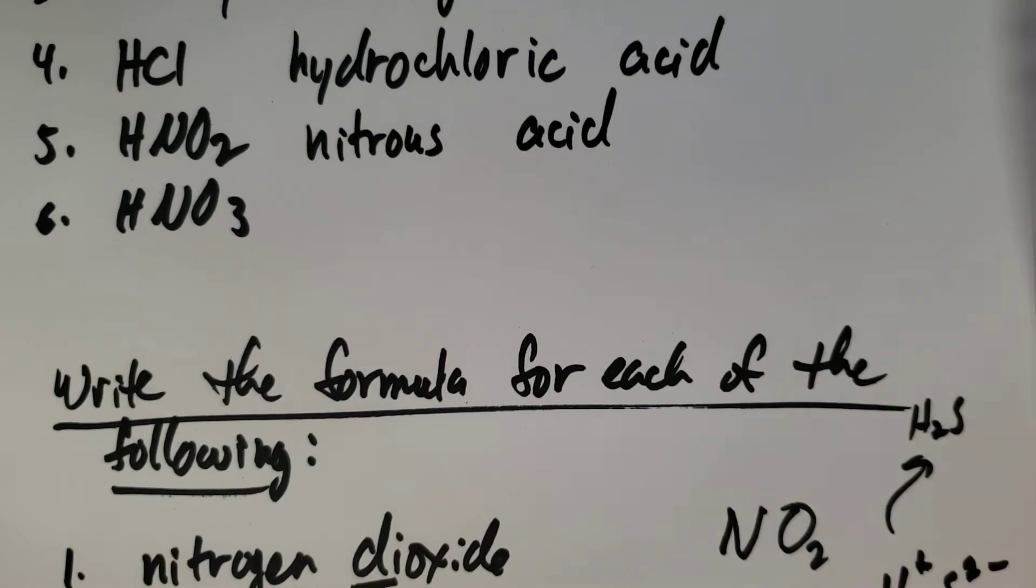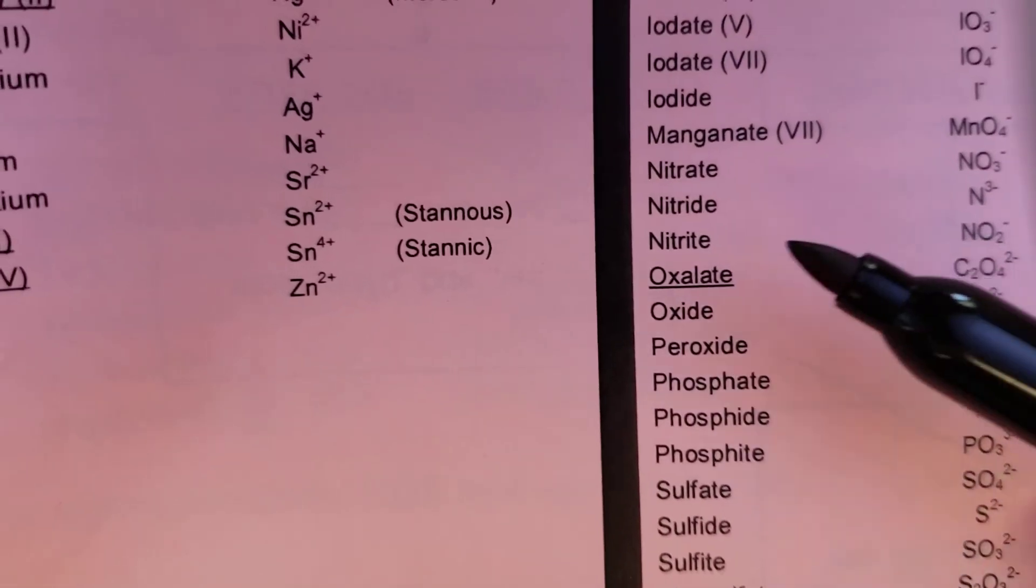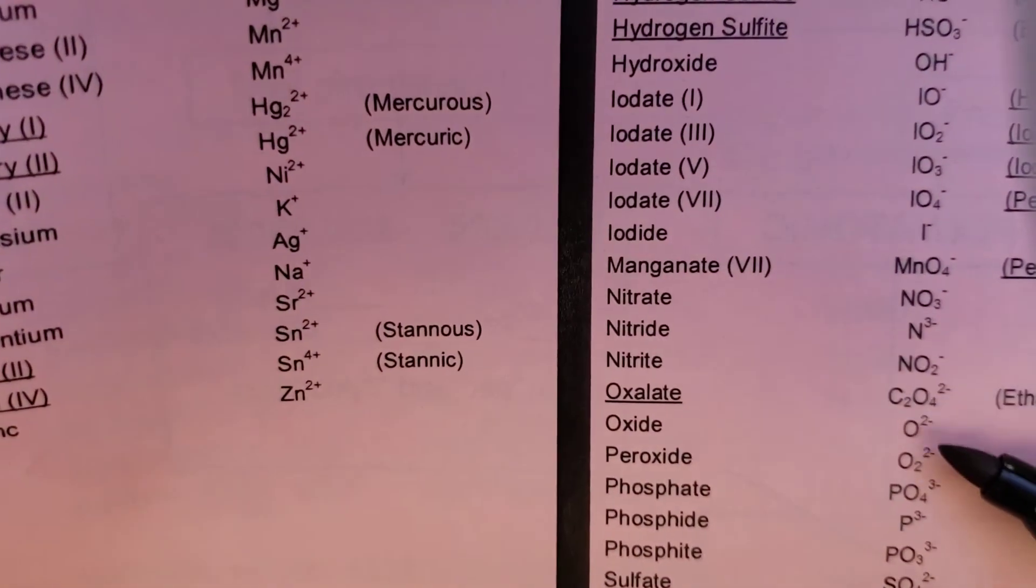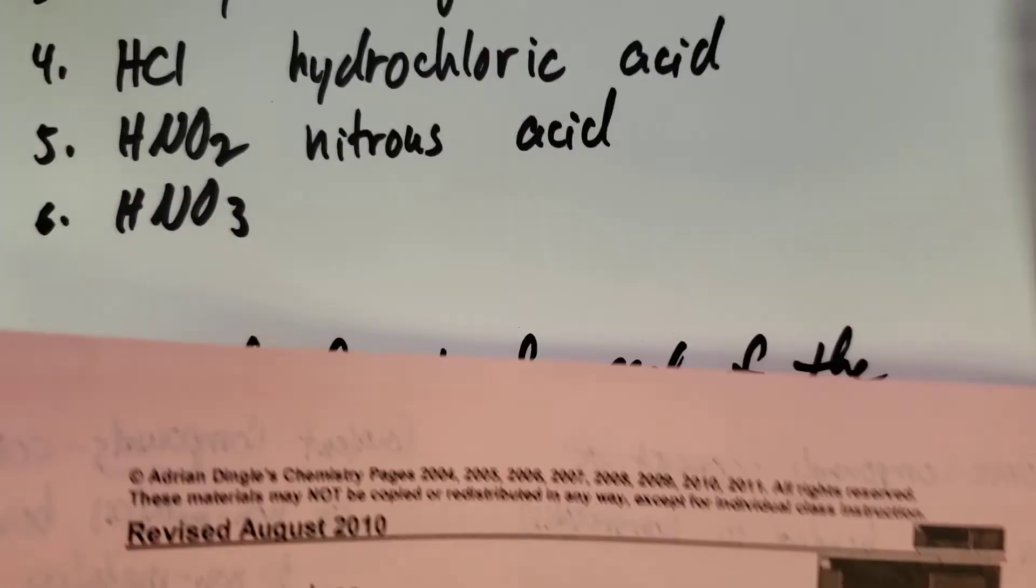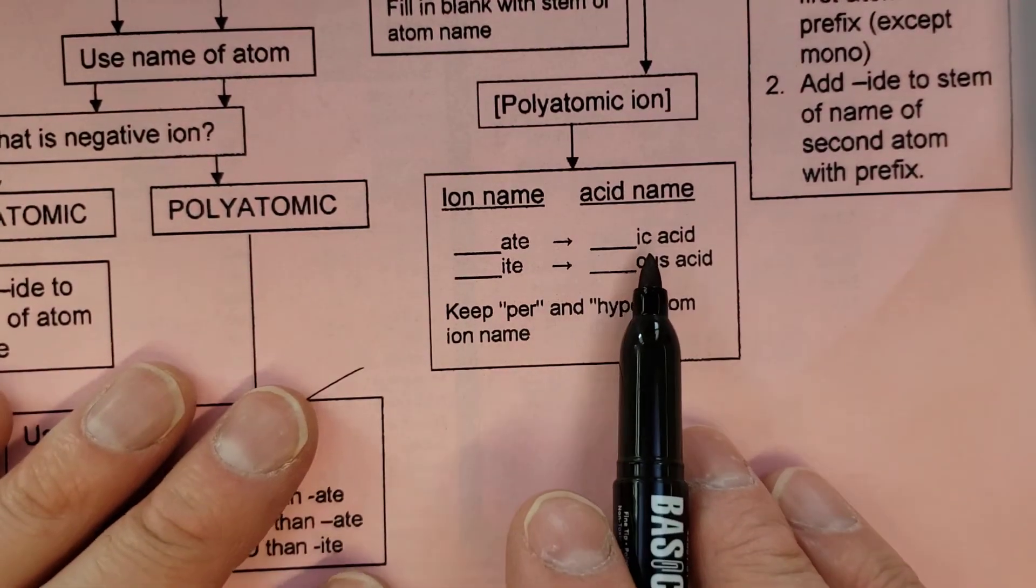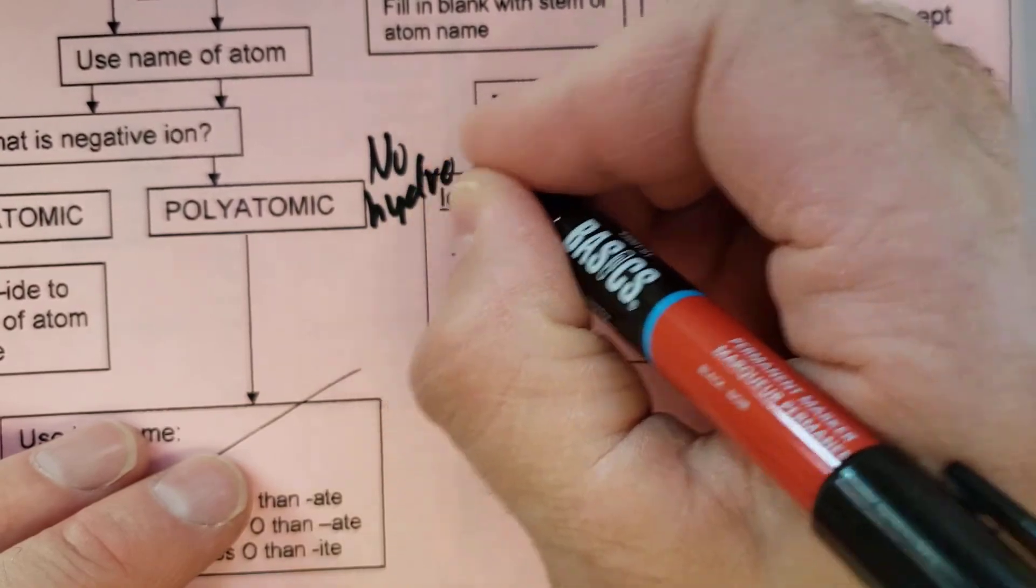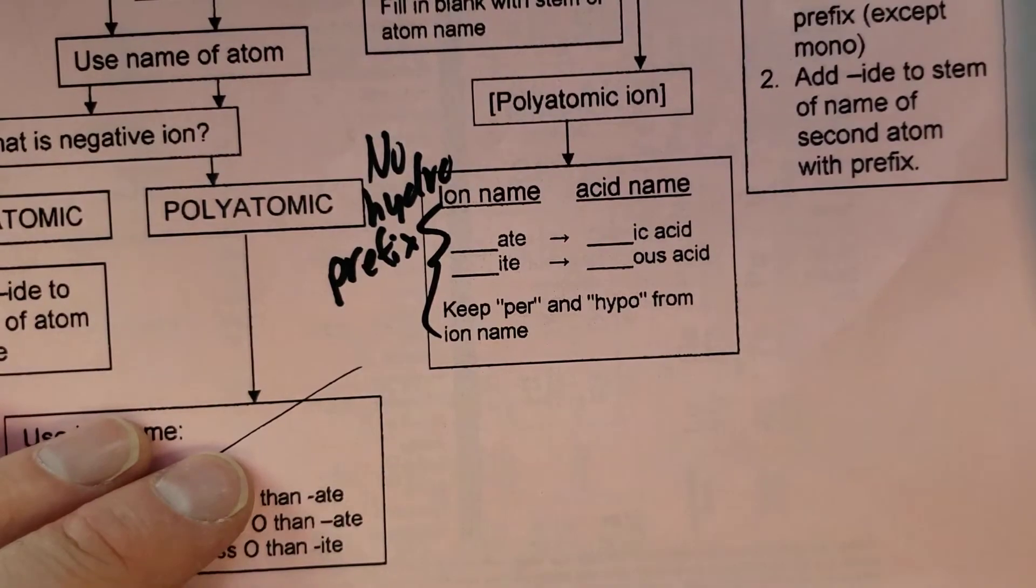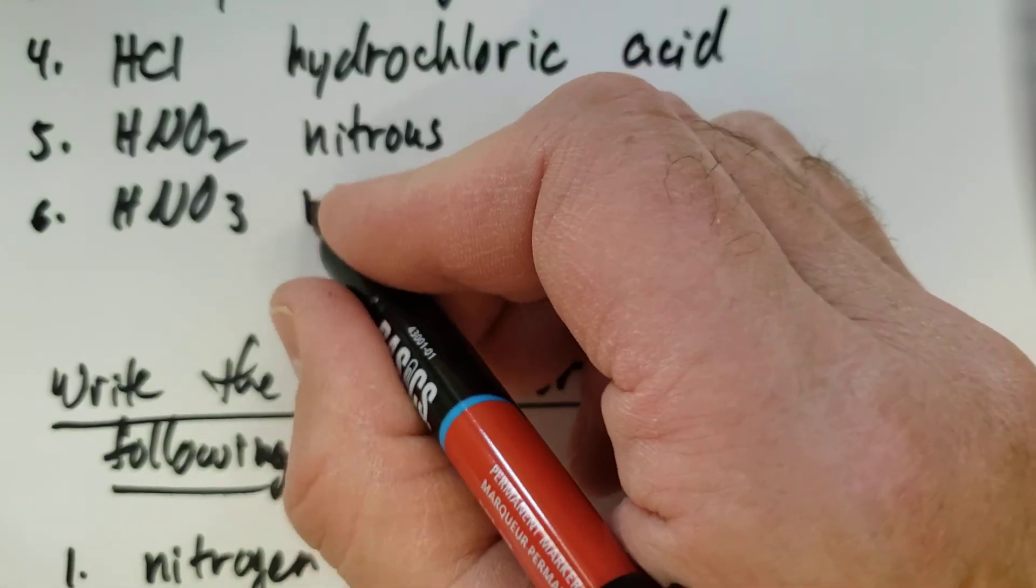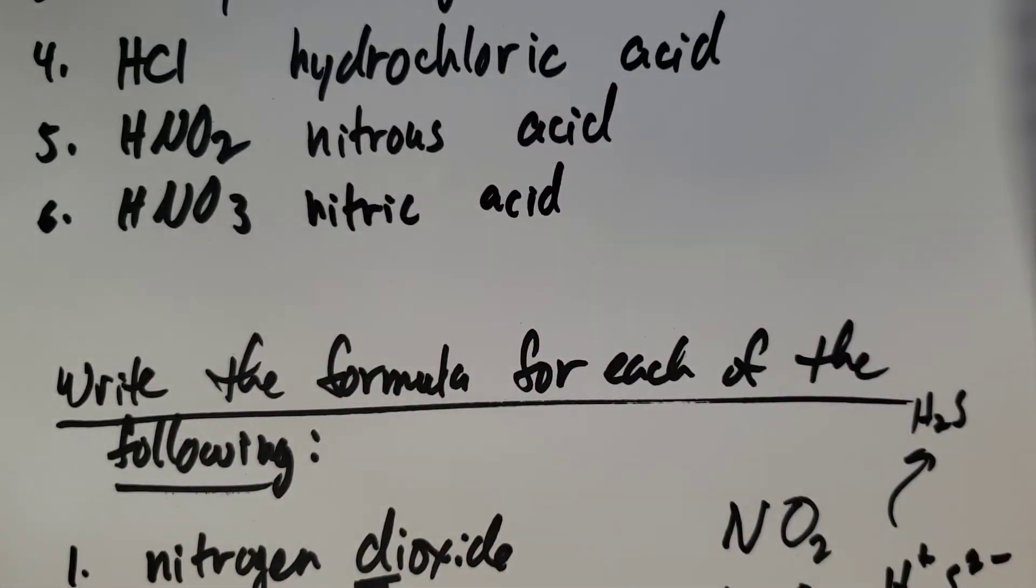And if I look at NO3, that's a few spots below there. NO3. It's nitrate. So of course, if it ends in ate, it simply becomes ic. And notice, no hydro prefix for these ones. We don't use that hydro prefix. So the nitrate becomes nitric acid.